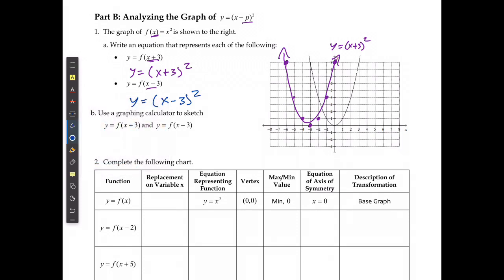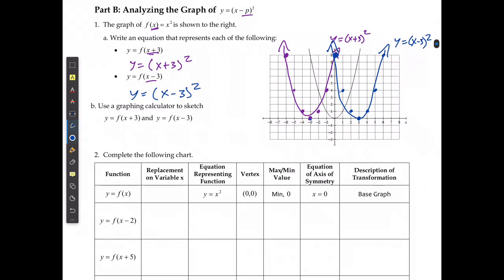For x minus 3 squared, the graph shifts to the right. Just like in the q case, the actual shape doesn't change — it still starts at the vertex and goes right 1 up 1, right 2 up 4. So this is literally just moving the entire graph left and right.